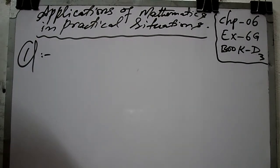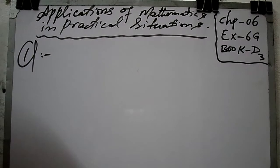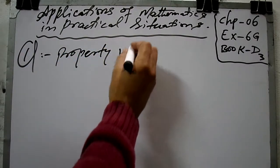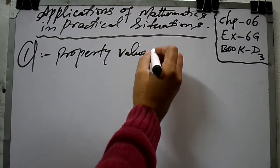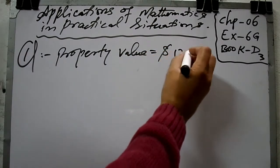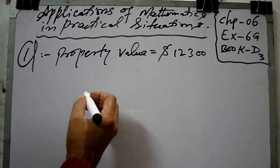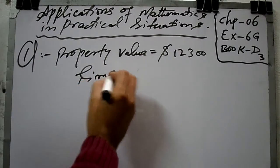Please read the statement: the annual value of a property is $12,300. Find the property tax payable for a time period of eight months at the rate of sixteen percent. First of all, you have to write the data: property value is equal to $12,300.